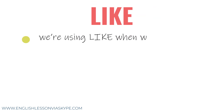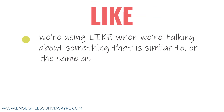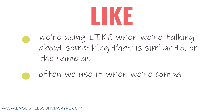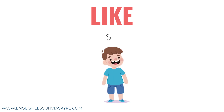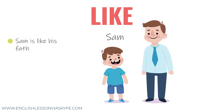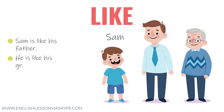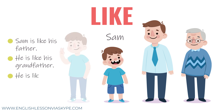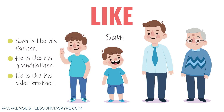We use 'like' when we're talking about something that is similar to or the same as something else. We often use it when we're comparing people. For example: this boy is like his father, he is like his grandfather, he is like his older brother — he is similar to them or the same as them in terms of perhaps his stature, his build, his looks, his characteristics. He's not exactly the same, but he just looks like, acts like, or behaves like them.